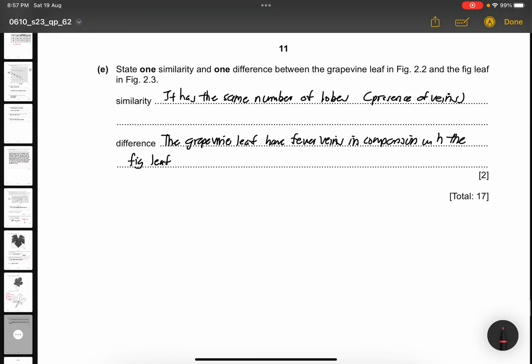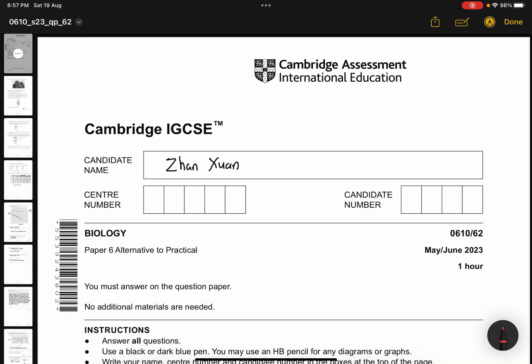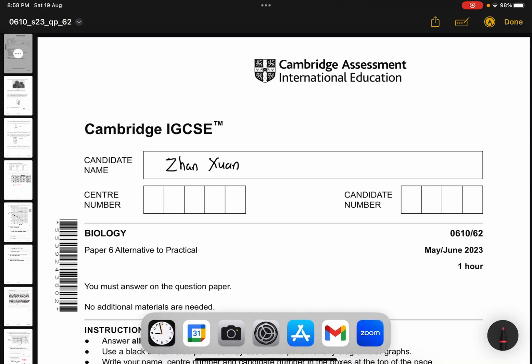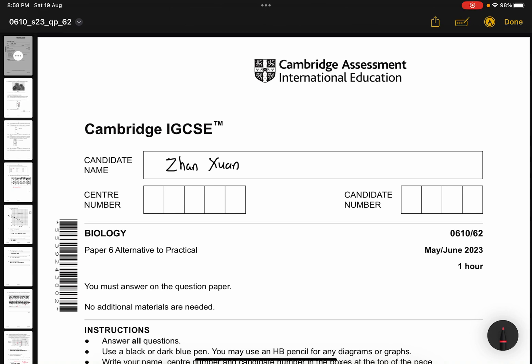Part E. State 1 similarity and 1 difference between the grapevine leaf in figure 2.2 and the fig leaf in figure 2.3. The similarity is that it has the same number of lobes, the presence of veins, the patterns of veins and an uneven edge. The difference is that the grapevine leaves have fewer veins in comparison with the fig leaf which has more veins. Or, you can see that the grapevine leaf has more sharp pointy lobes and the fig leaf having smooth and wavy rounded lobes. So, that's all for this paper. In my opinion, this paper is challenging in the graph drawing, for example. Maybe some of the... I won't really say it's the calculation, but mostly, I think the hardest part of this paper is the graph question. Other than that, it's just a normal paper 6 question. I hope you enjoyed this video. Hope to see you guys next time. Bye-bye.